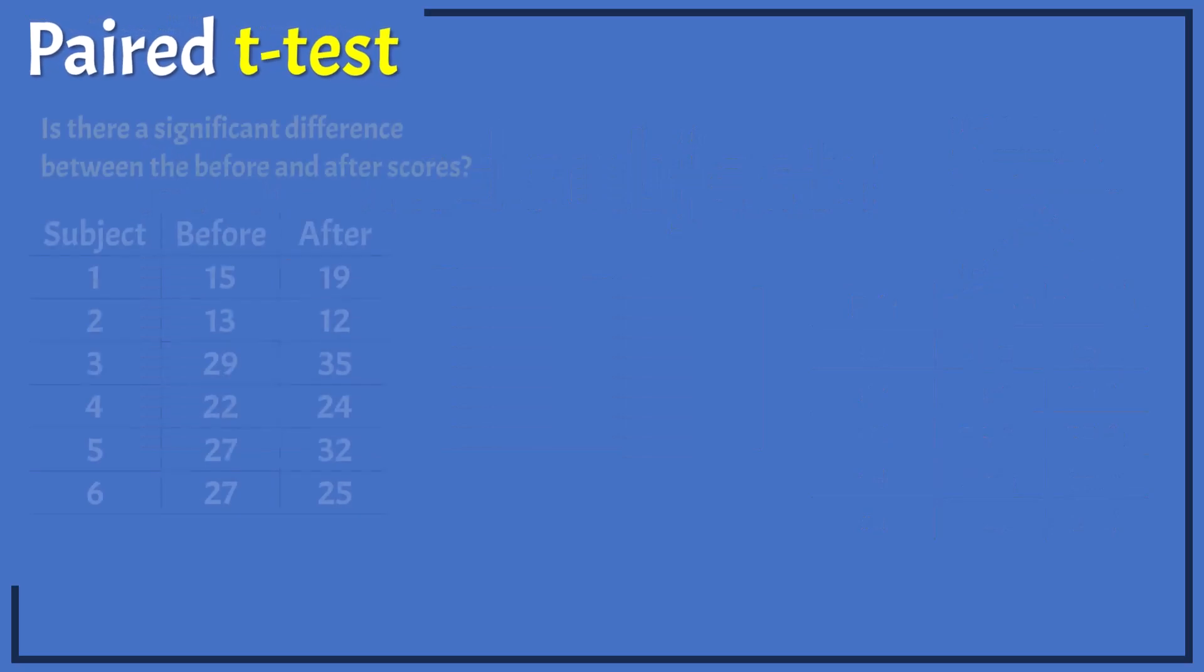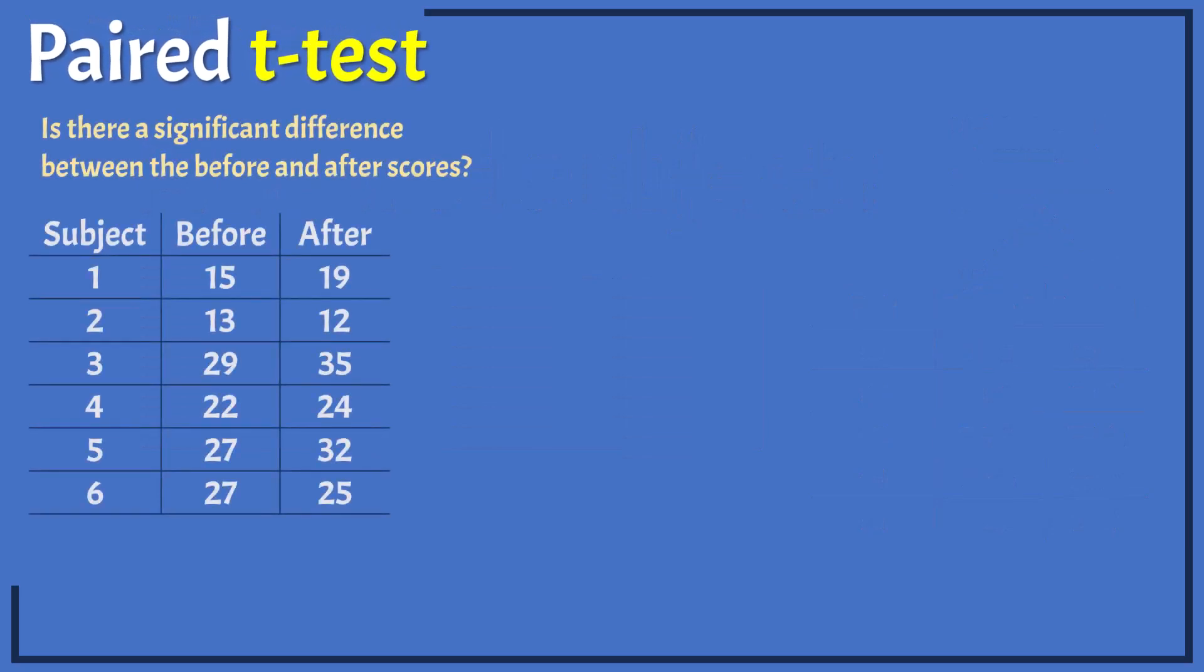Let's now examine a repeated measures example. Here we have scores before and after some treatment. We want to determine if a significant difference exists between the before and after scores. This requires a paired sample t-test because each pair of scores belongs to one subject. We will be applying this test statistic.